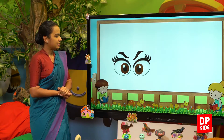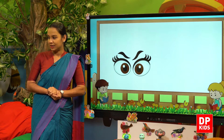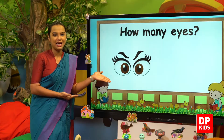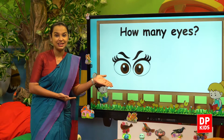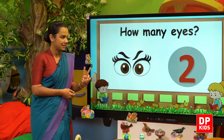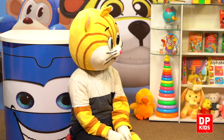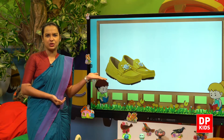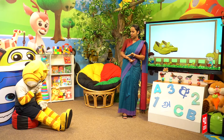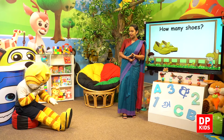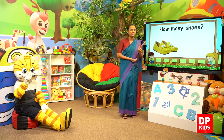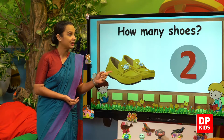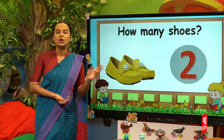Let's see. Next is — oh, Kitty, just like your eyes. Kitty, how many eyes? Yes, two eyes. Right, next we have shoes — yellow shoes. How many shoes have you, Kitty? Yes, two. Two shoes.